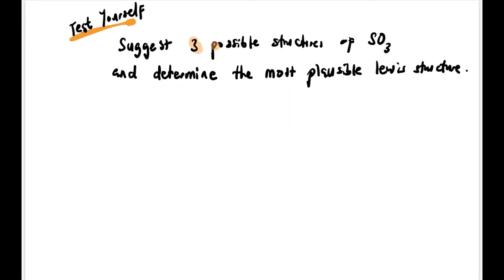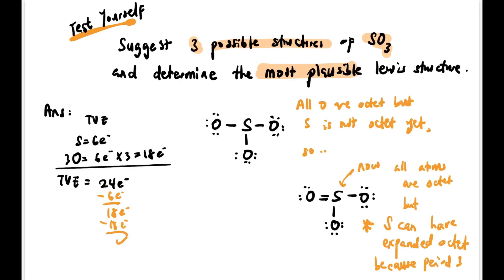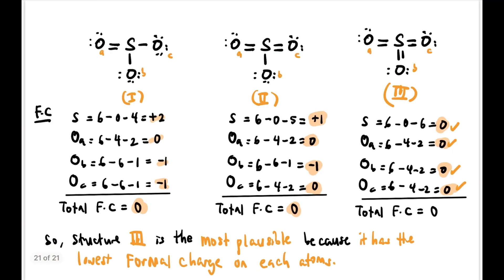Now test yourself: suggest 3 possible structures of SO3 and determine the most plausible Lewis structure. Take a pause. The answer: first calculate TVE. When S is not yet octet, give it octet first. S can have expanded octet since it's Period 3. This gives more possible structures. We calculate formal charge for each structure and each atom, and find the most plausible Lewis structure.